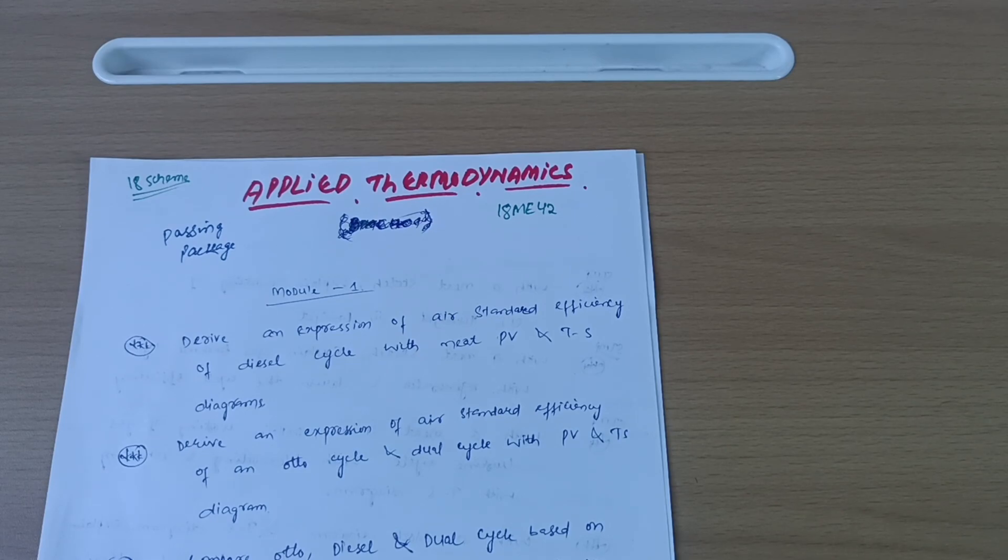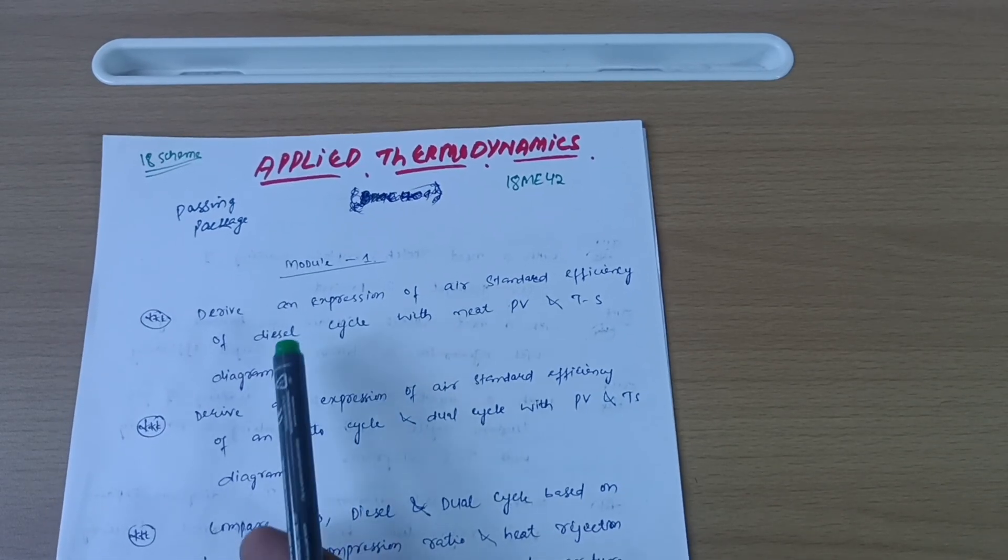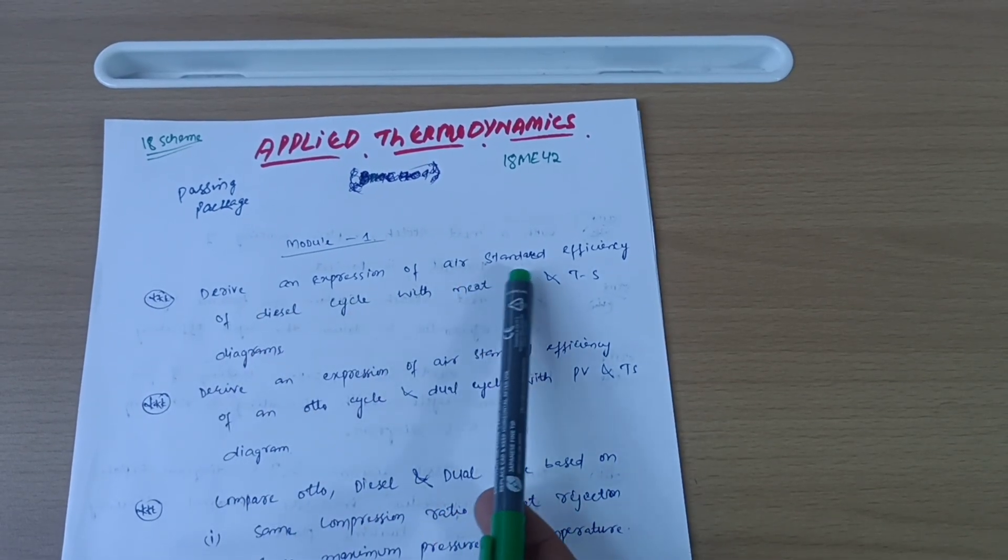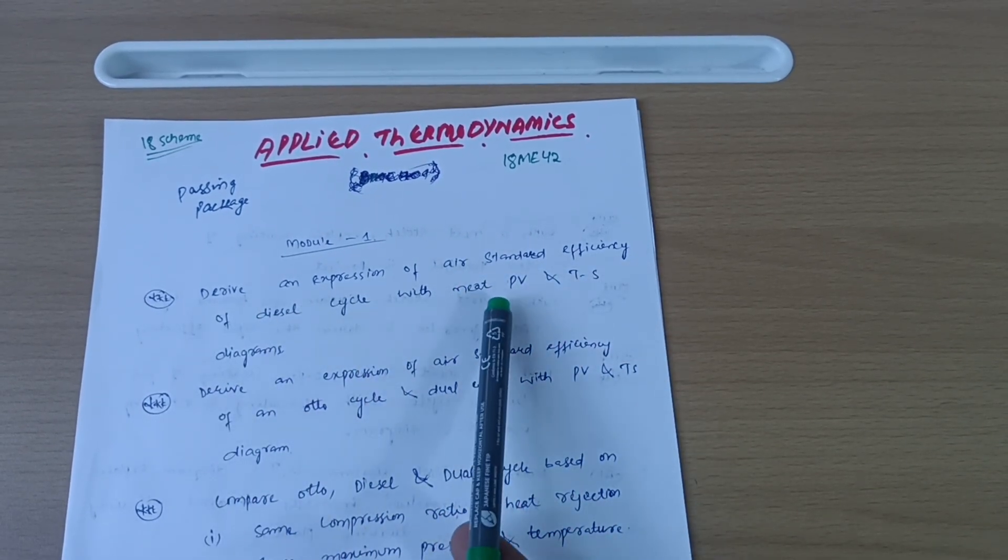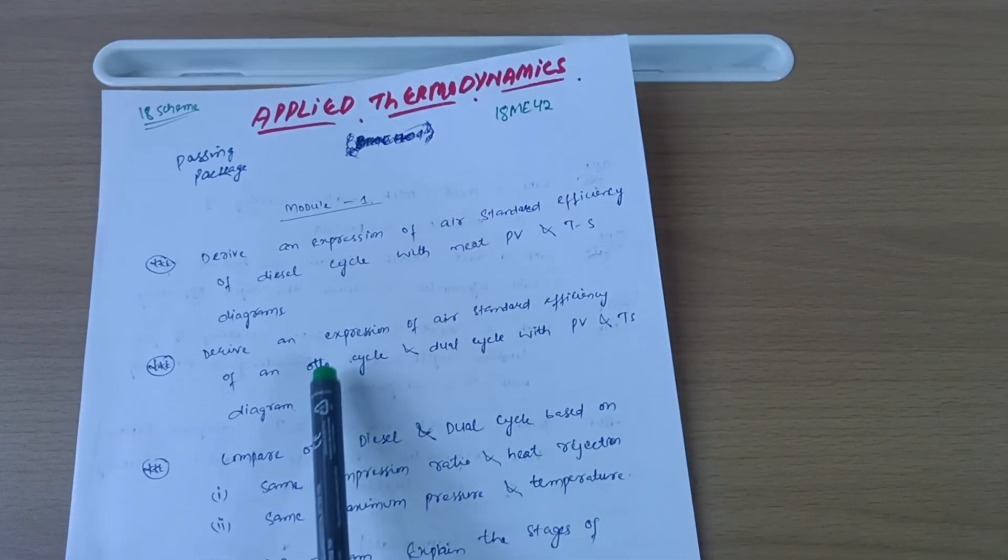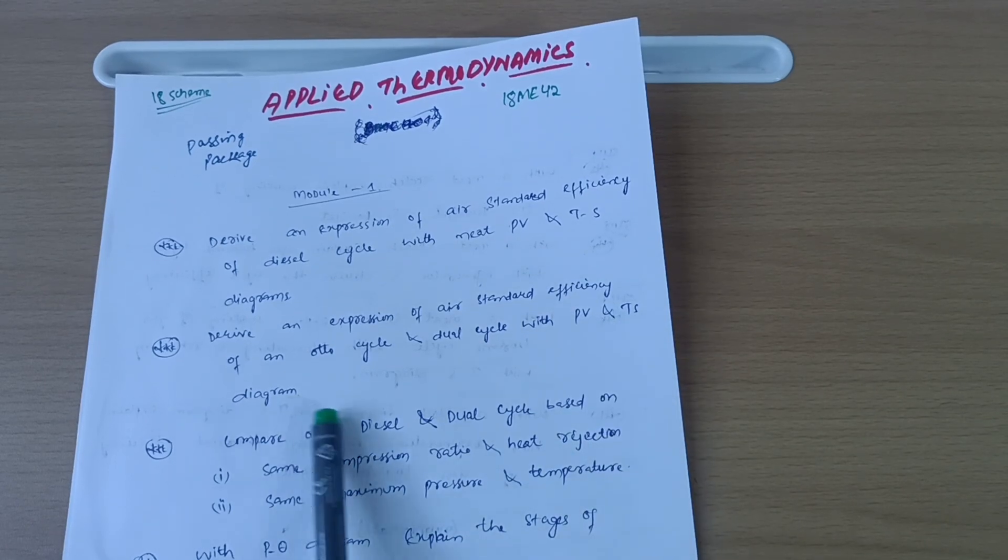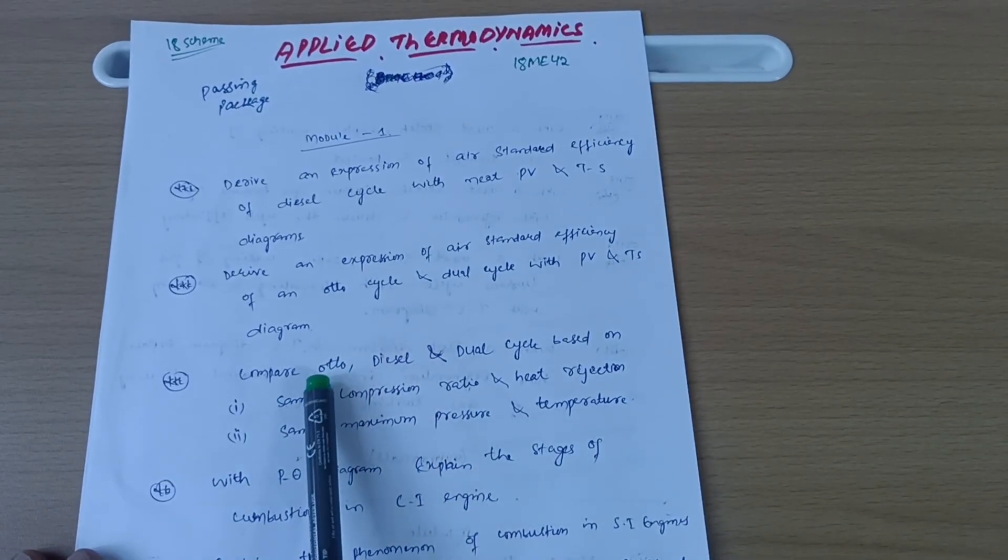Let me discuss module-wise important questions. Derive an expression of air standard efficiency of diesel cycle with neat PV and TS diagrams. Derive an expression of air standard efficiency of Otto cycle and dual cycle with PV and TS diagrams.